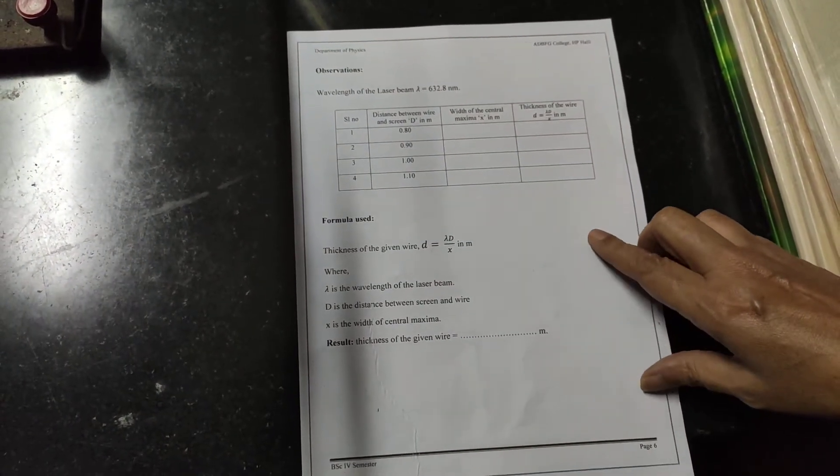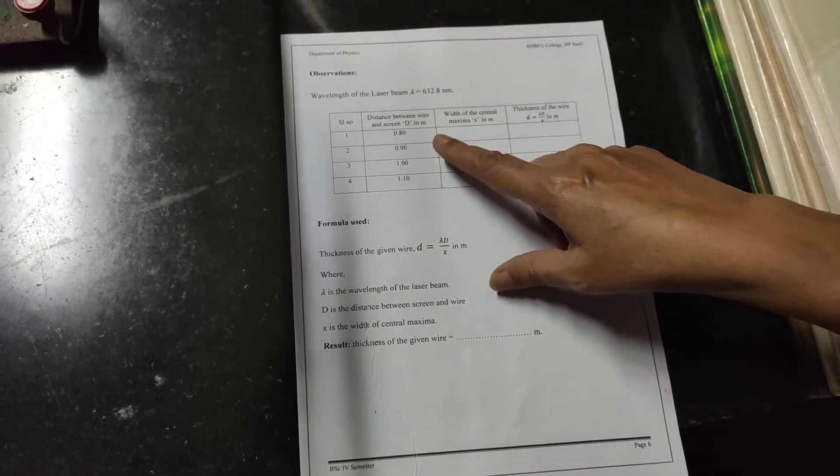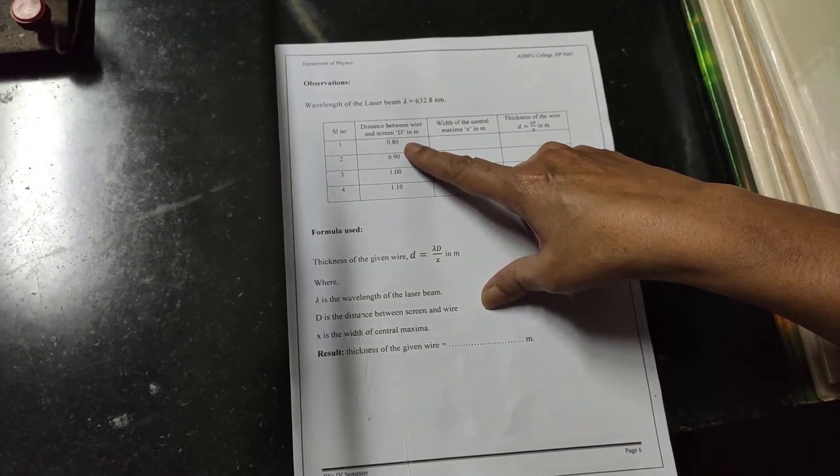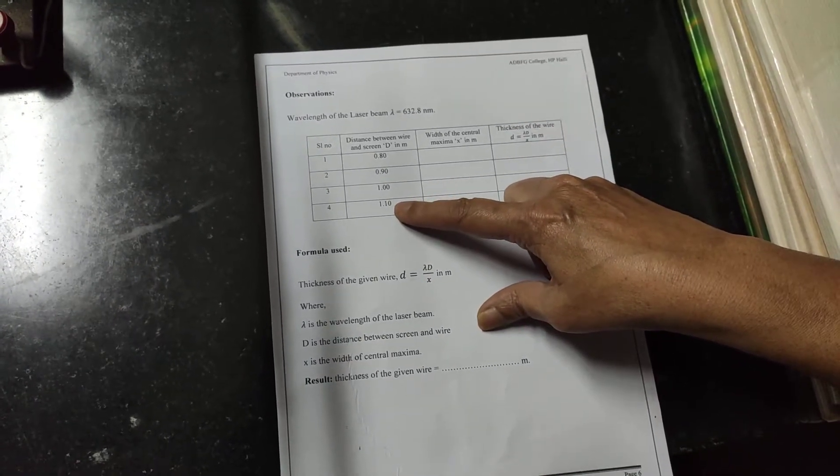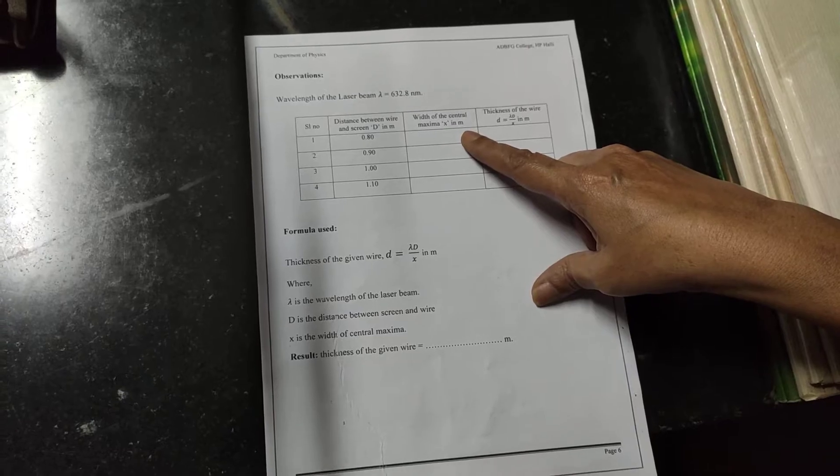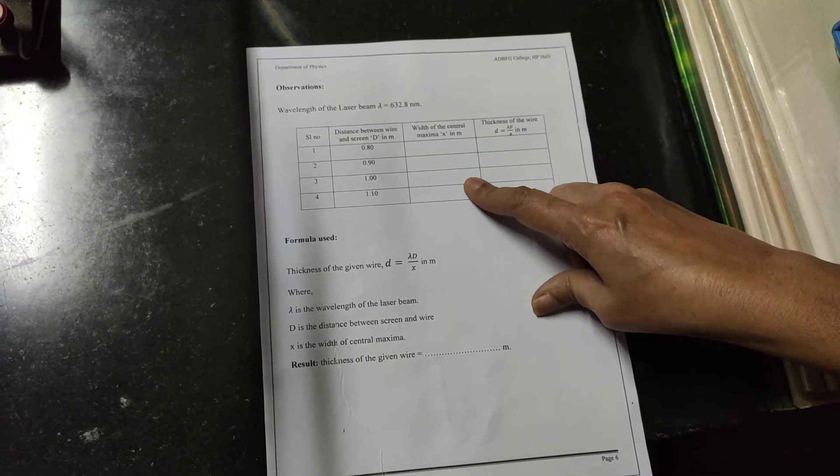Now you see here is the tabular column. So 80 centimeter in meters you write it as 0.8, 0.9, 1, 1.10 like this and every time you have to note on the width of the central maxima in this column.